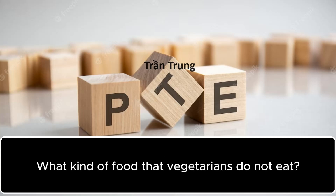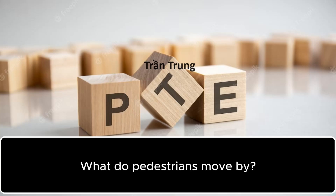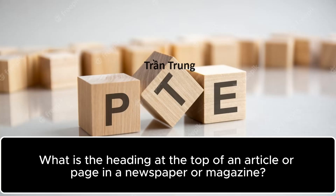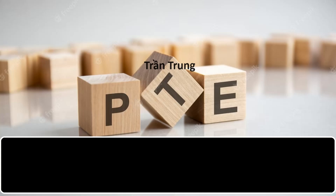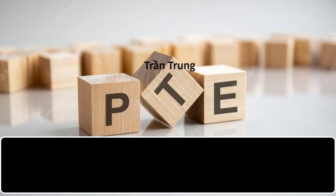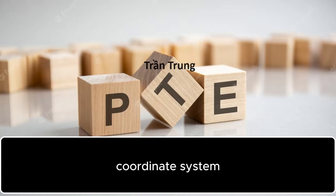What kind of food do vegetarians not eat? Meat. What do pedestrians move by? Foot. What is the opposite of north? South. What is the heading at the top of an article or page in a newspaper or magazine? Headline. What is the term used to describe a period of seven days? Week. What do you call the diagram which includes x-axis and y-axis? Coordinate system.